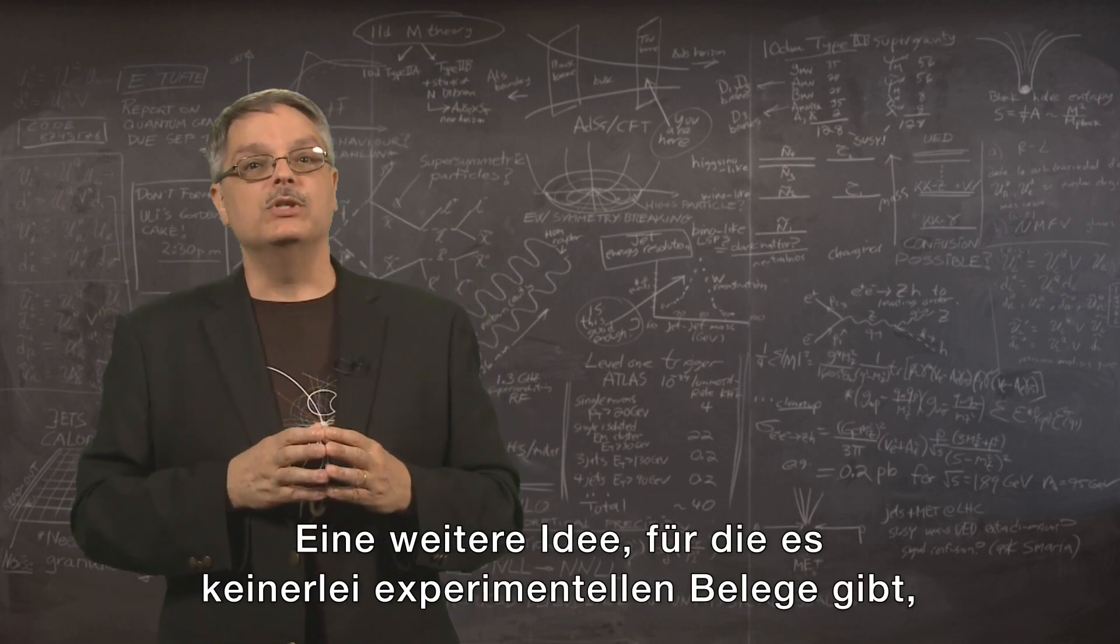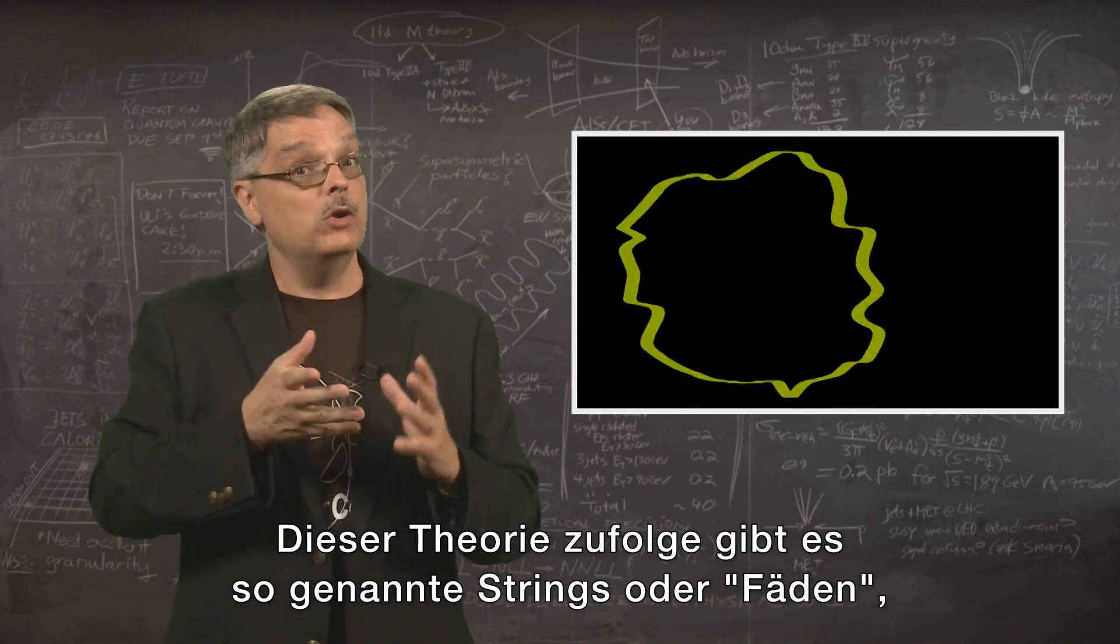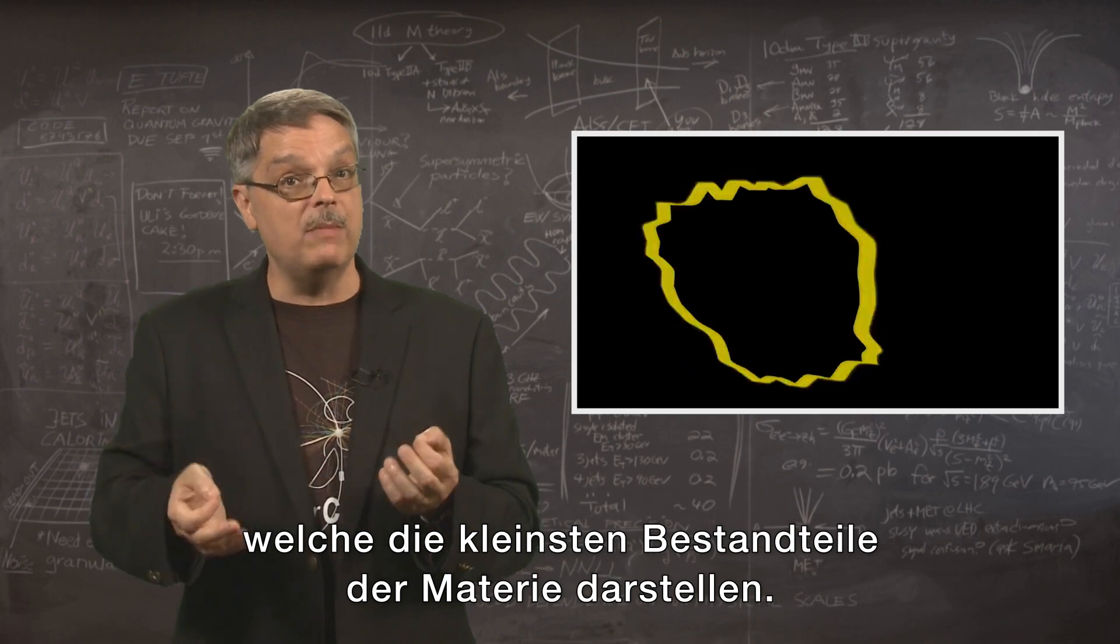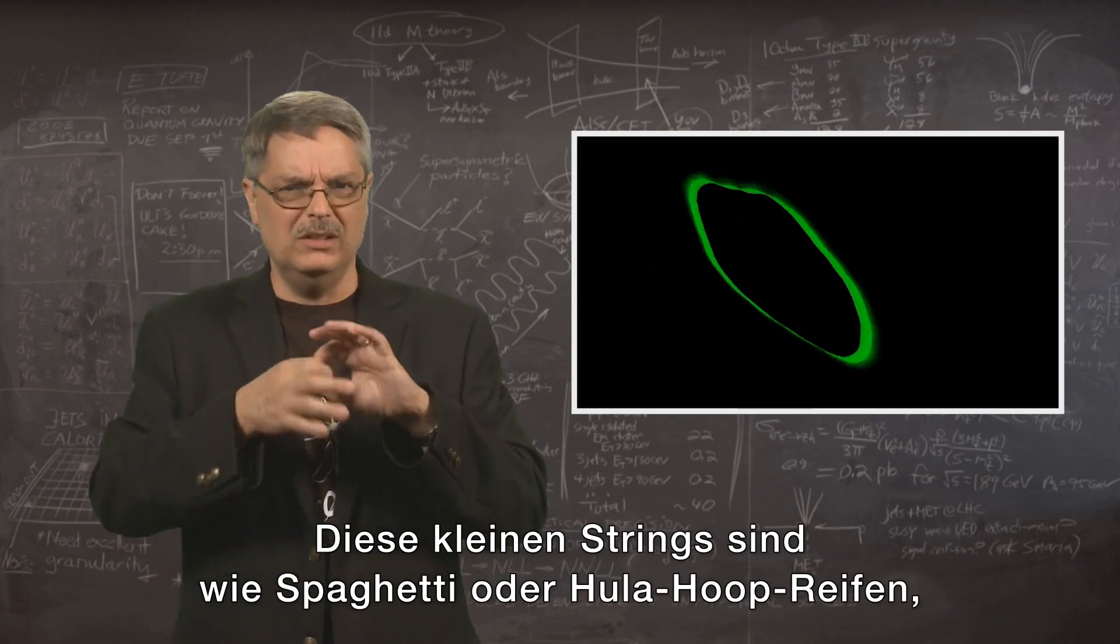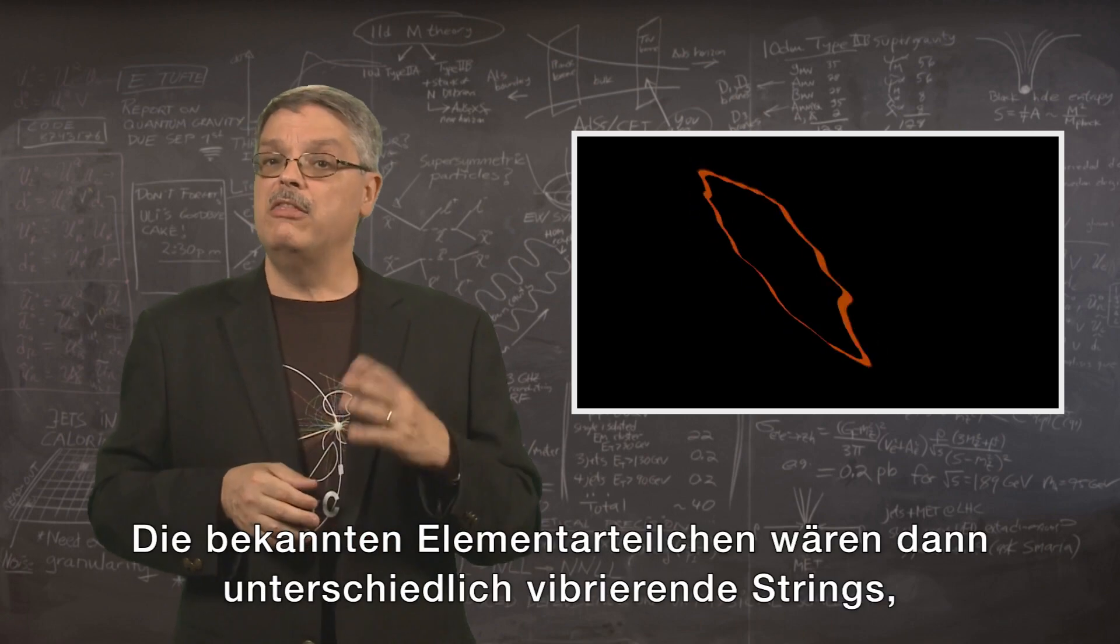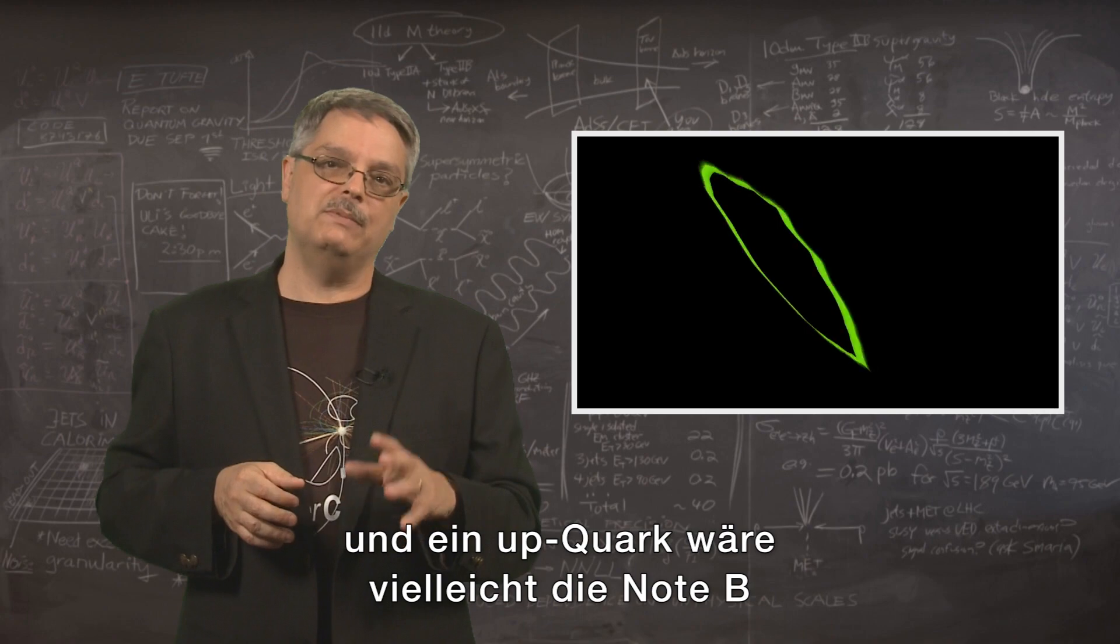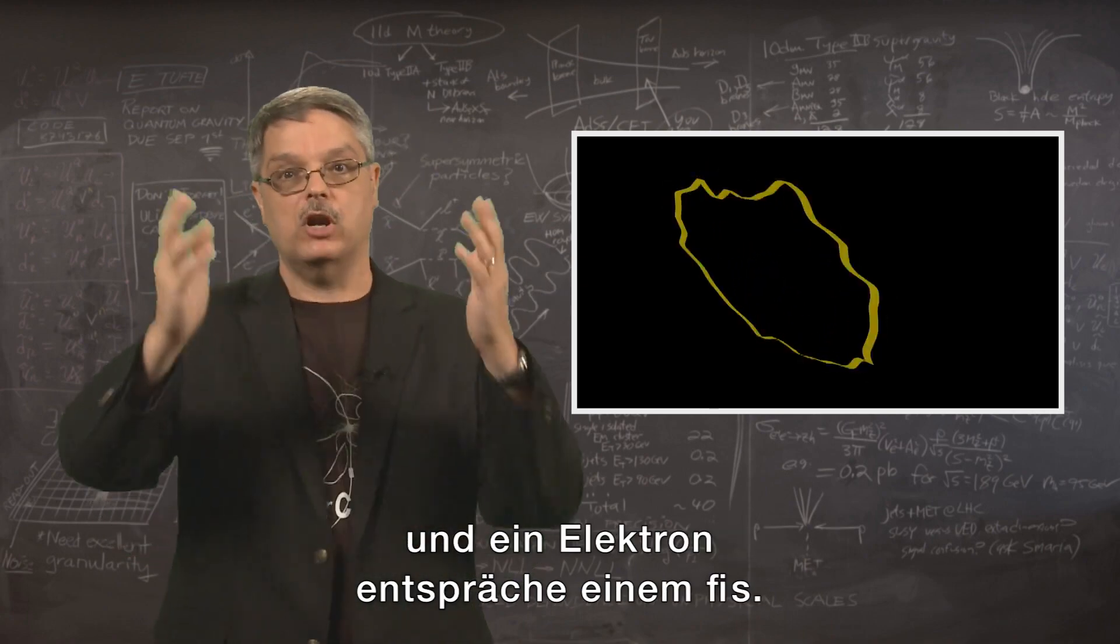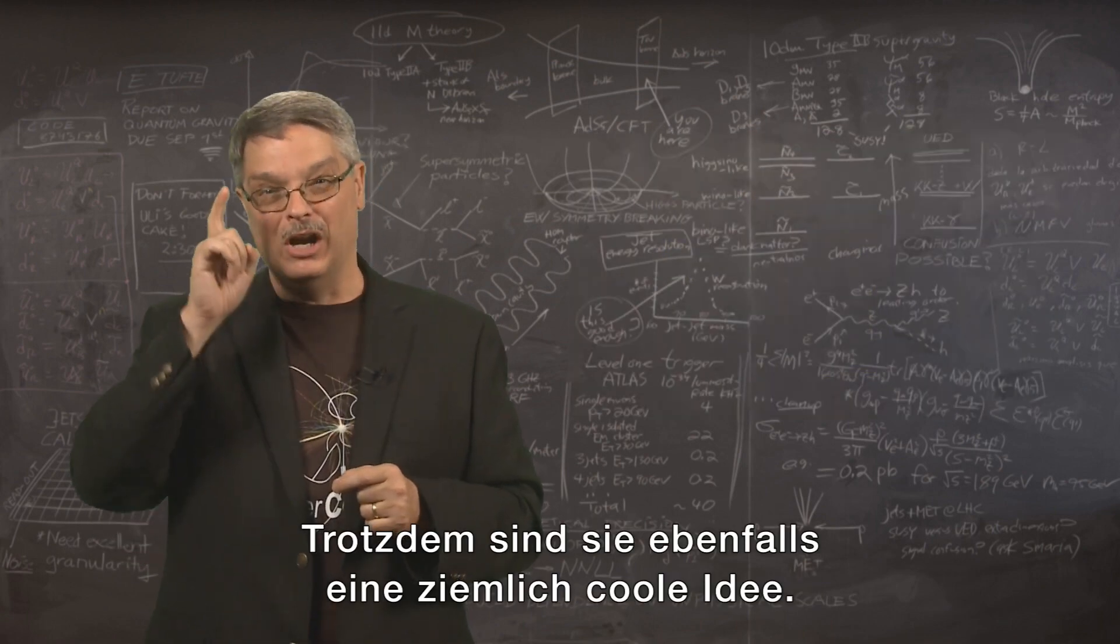Another idea for which there is no experimental evidence is the theory of superstrings. According to this idea, there are objects called strings that are the smallest constituents of matter. These tiny strings are like little sticks of spaghetti or little hula hoops that vibrate. The familiar particles are just different vibrations of the strings with an up quark perhaps being a B-flat and an electron being an F-sharp. Again, don't believe in superstrings, but it's also a really cool idea.